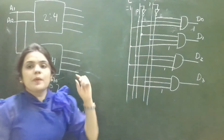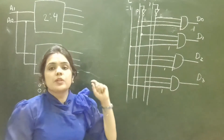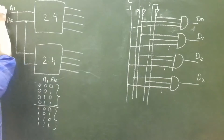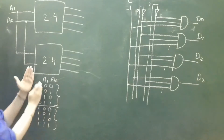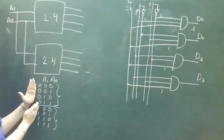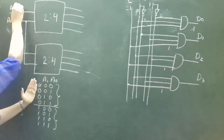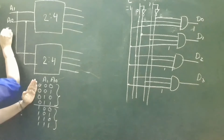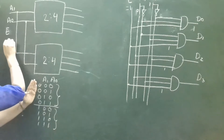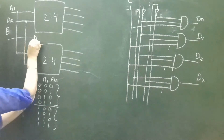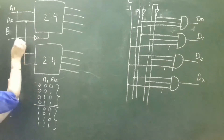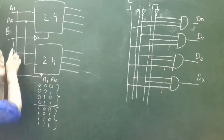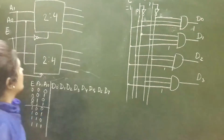This can be achieved by adding another input E — an enable input. Complement of E should be connected to the first (upper) decoder, and simply E should be connected to the second (lower) decoder.